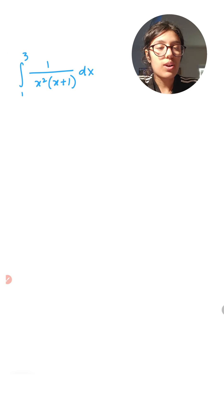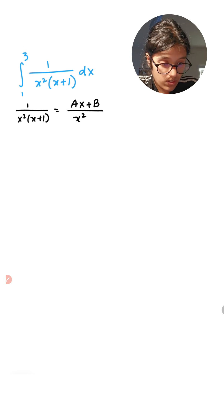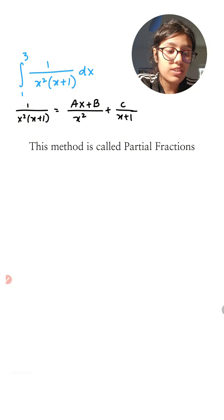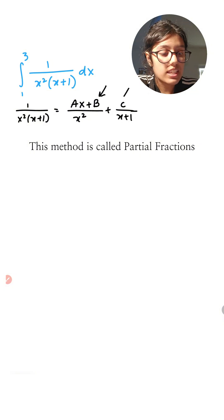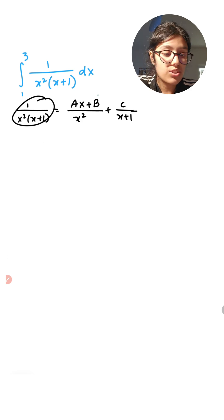So I'm going to rewrite this expression as this. Essentially what I did over here is that A, B, and C are constants and I broke apart this into two fractions, and I did that by having the factors as the denominator.